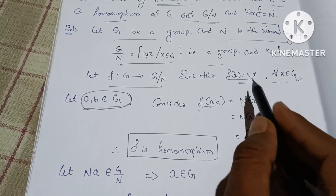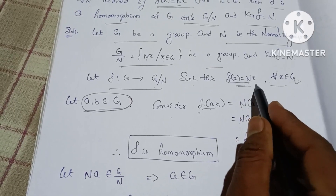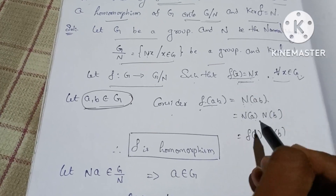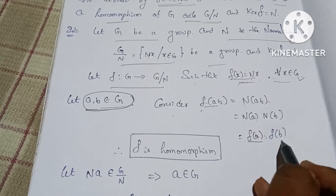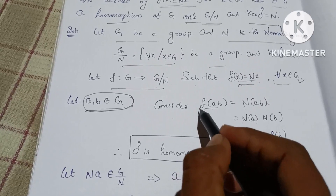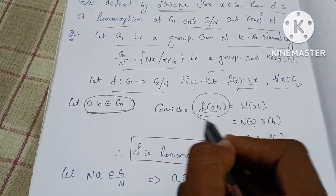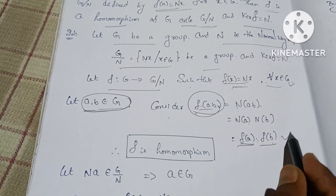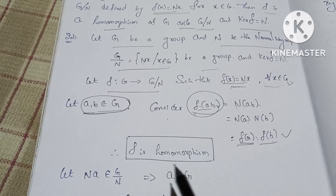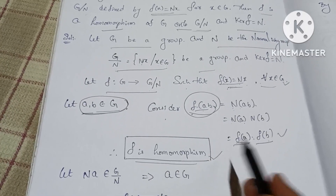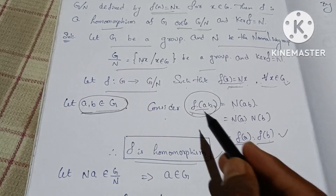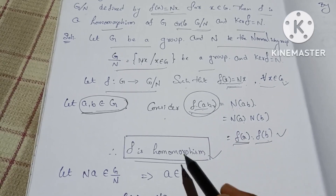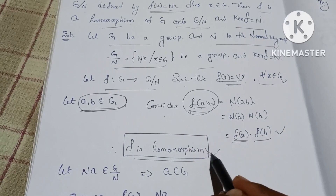N(AB) equals NA into NB. So F(AB) equals NA into NB, which equals F(A) into F(B). Therefore F(AB) = F(A)·F(B), and so F is a homomorphism.